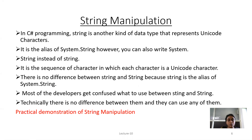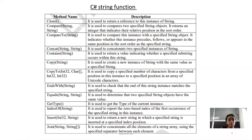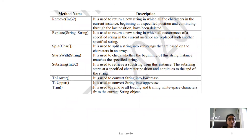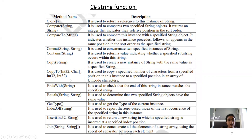Now we will see some C-Sharp string functions before the practical demonstration. The methods of string include: Clone, Concat, Contains, Copy, EndsWith, Equals, and Insert. There are also methods to Remove part of a string, Replace a string, find a Substring, and convert to Lowercase, Uppercase, or Trim the string. A description of each method is provided, and we will use these methods in our practical demonstrations.